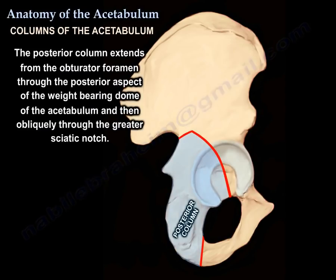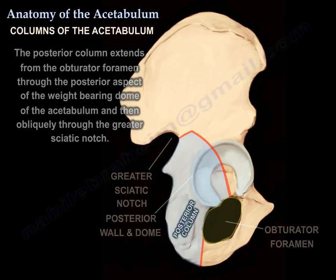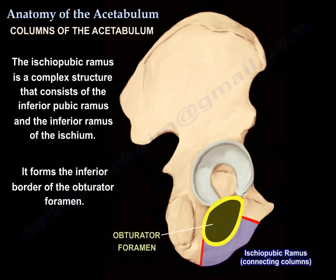The posterior column extends from the obturator foramen through the posterior aspect of the weight-bearing dome of the acetabulum and then obliquely through the greater sciatic notch. The ischiopubic ramus is a complex structure that consists of the inferior pubic ramus and the inferior ramus of the ischium, forming the inferior border of the obturator foramen.